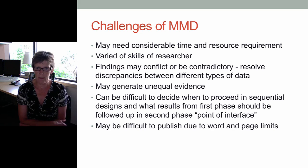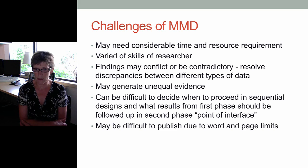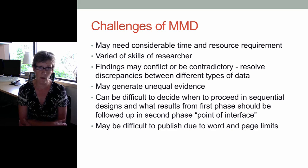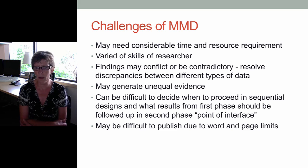There are challenges with mixed methods design. It may take considerable time and resources — it may take longer and require more personnel. The skills of the researcher need to be varied, or there needs to be a research team with complementary skills in both quantitative and qualitative design. The findings may conflict or be contradictory, and there's a need to resolve discrepancies between different types of data. It may generate unequal evidence where one approach is more prominent. It can also be difficult to decide when to proceed in sequential design and what results from the first phase should be followed up in the second phase — this is known as the point of interface. It may also be difficult to publish due to word and page limits, as combining both results can lead to a fairly extensive manuscript.